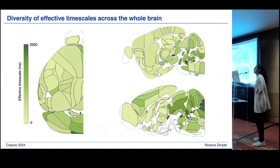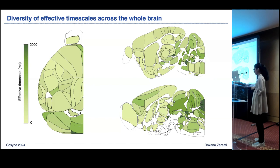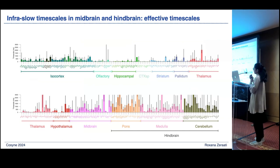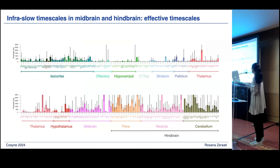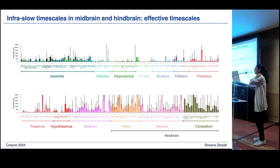Looking at the whole-brain timescale map, we plot the median timescale per brain area. We see much lower timescale values in the cerebellum, midbrain, and subcortical structures — but also we find much longer timescales within some midbrain and hindbrain areas compared to the cortex. This is interesting because these brain areas have been shown to be involved in evidence accumulation, and they may be intrinsically equipped with neurons having very slow timescales to support that function.